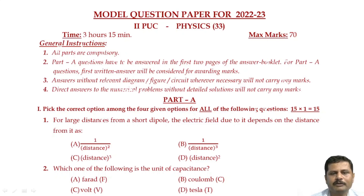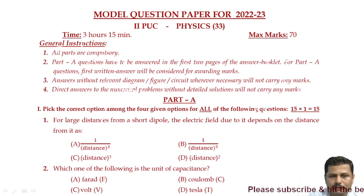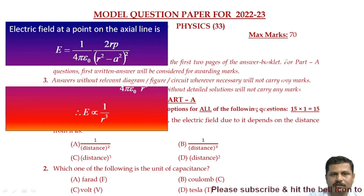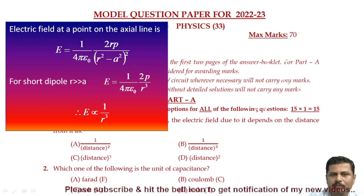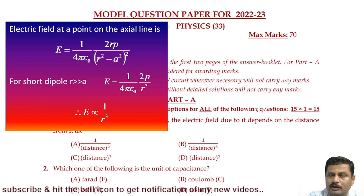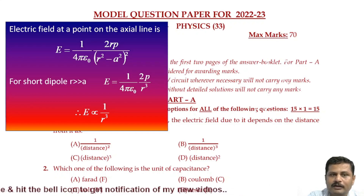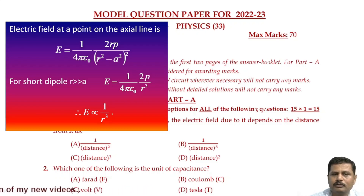For large distances from a short dipole, the electric field due to it depends on the distance from it as. We need to find out whether the electric field due to the short dipole is directly or inversely proportional to its distance. The electric field at a point on the axial line is E equals 1 over 4π times 2rp divided by (r² minus l²)². But for a short dipole, r is much greater than l, so we get E equals 1 over 4π times p divided by r³. So E is inversely proportional to r³.